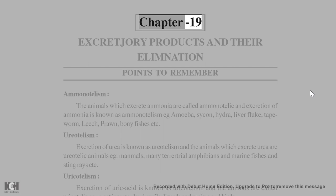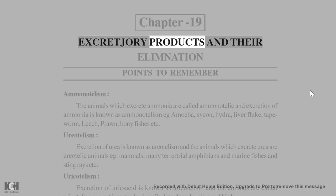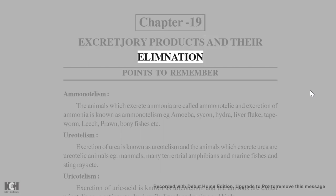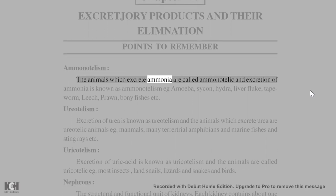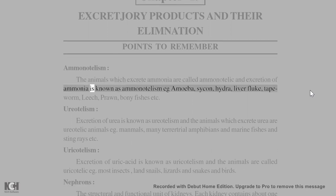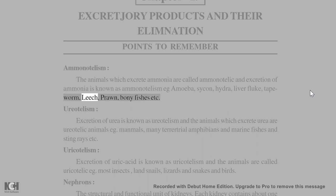Chapter 19: Excretory Products and Their Elimination — Points to Remember. Ammonotelism: The animals which excrete ammonia are called ammonotelic, and excretion of ammonia is known as ammonotelism. Examples include amoeba, Sycon, hydra, liver fluke, tapeworm, leech, prawn, and bony fishes.